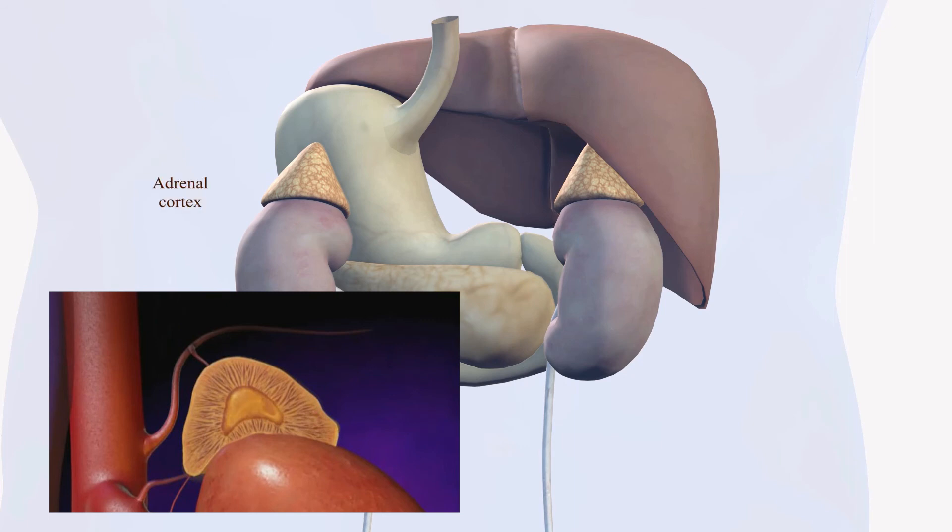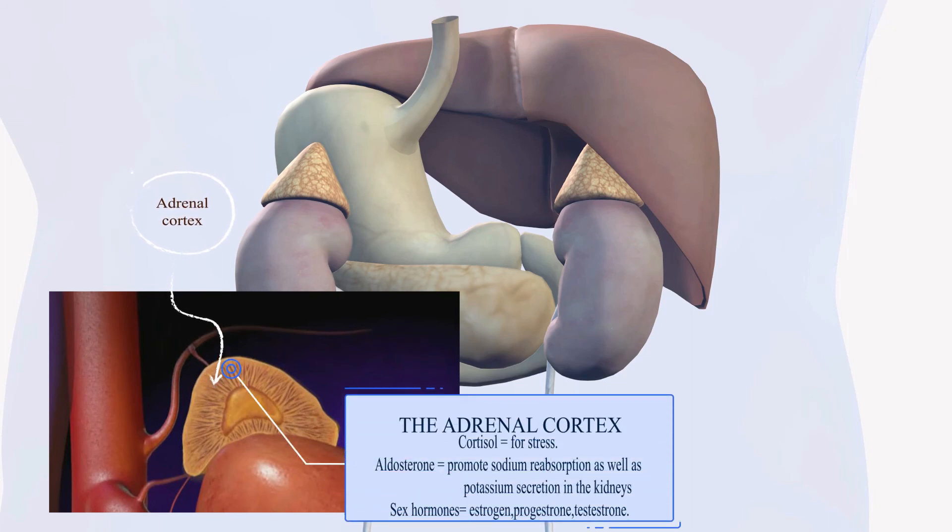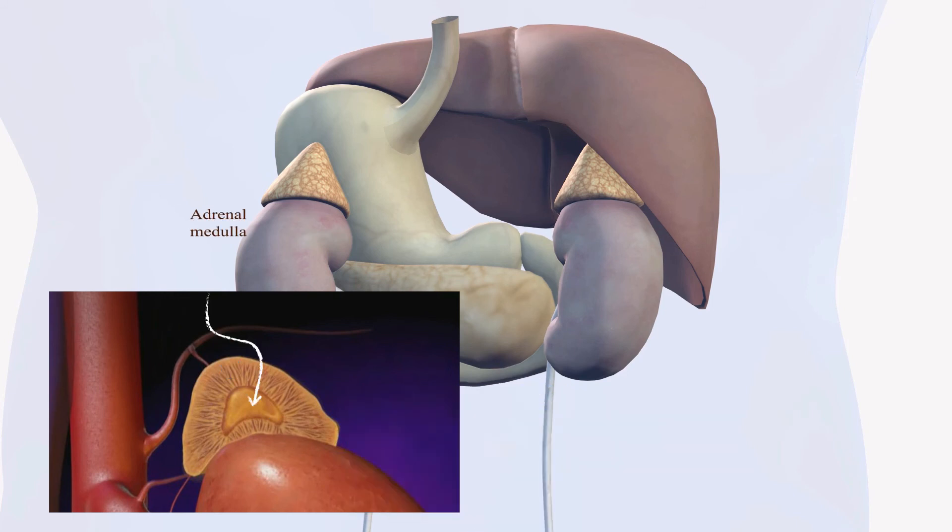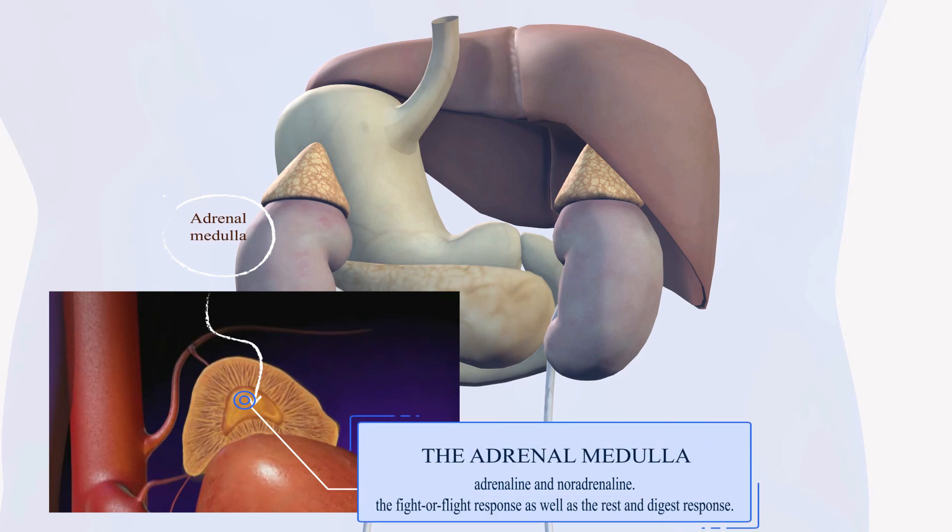The adrenal cortex secretes cortisol and aldosterone and sex hormones till puberty. Cortisol is essentially for stress, and aldosterone is to promote sodium reabsorption as well as potassium secretion in the kidneys. And then we have the adrenal medulla which secretes adrenaline and noradrenaline also known as epinephrine or norepinephrine. These hormones are important in the fight or flight response as well as the rest and digest response.